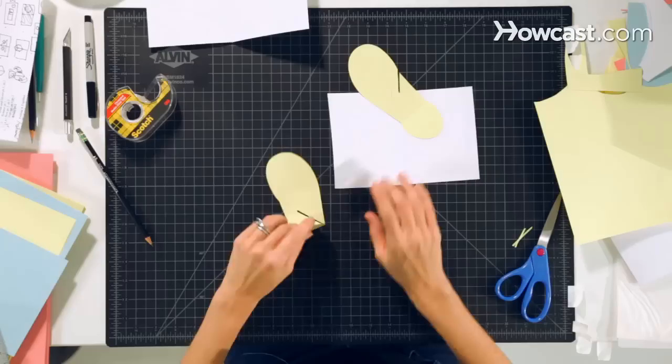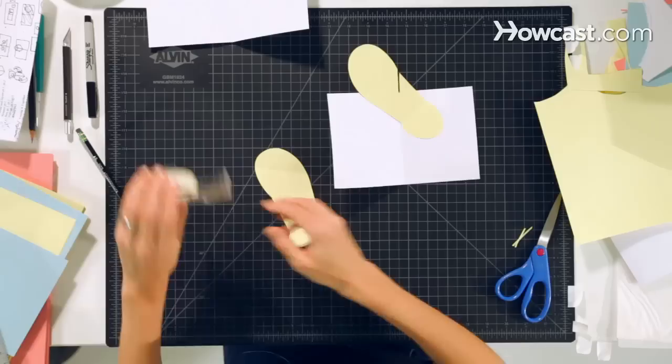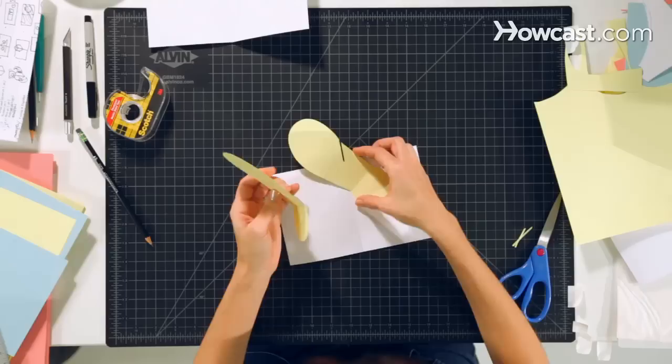And also put double stick tape on the bottom of the second tab of the second wing. And now when we put these together, you're going to slot them so that the wings are forward.